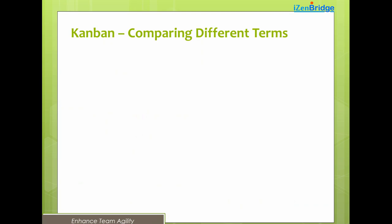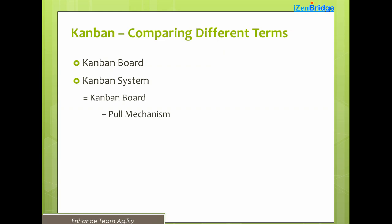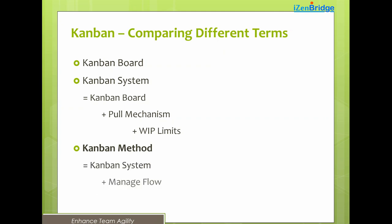Let's compare three commonly confused terms. First, the Kanban board — just the visualization of your work. Second, the Kanban system, a concept from the Toyota Production System in the late 1940s — roughly a Kanban board plus a pull mechanism where people pull work rather than having it pushed to them. Third, the Kanban method — more than the Kanban system — it includes managing flow with active use of Kanban metrics and implementing continuous improvement.